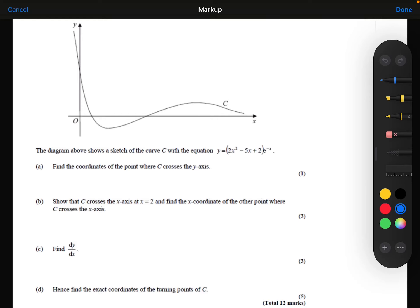The diagram above shows a sketch of the curve C with the equation y equals 2x squared minus 5x plus 2 multiplied by e to the power minus x. Part A: Find the coordinates of the point where the curve C crosses the y-axis.